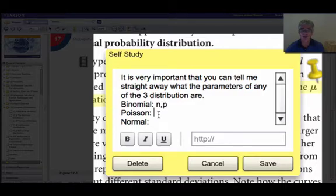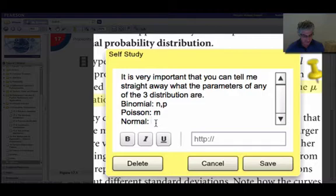The Poisson only needs one parameter to describe it. And that parameter was the mean or the average number of events per interval. And the normal distribution that we're coming on to now has the mean mu and the standard deviation.